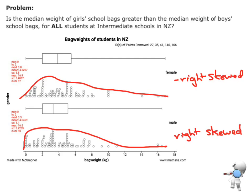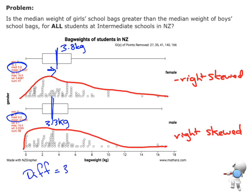Now I want to have a look at the medians — I want to compare this median with this median. The median weight for the girls is 3.8 kilos, and the median weight for the boys is 3.3 kilos. I can see that the median weight for the girls is a little bit more than the median weight for the boys. The difference is 3.8 take away 3.3, which gives 0.5 kilos. So the girls' median is bigger than the boys' median bag weight by 0.5 kilos — half a kilo.